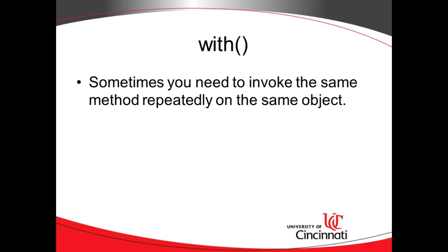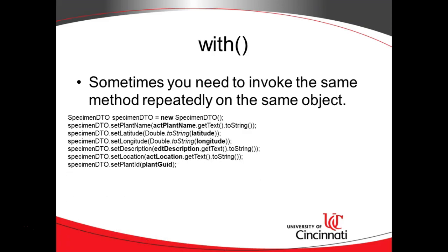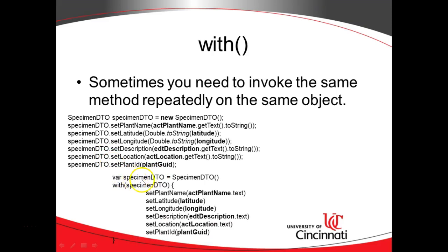with is an interesting one that I like in Kotlin. If you find you're invoking a series of methods on the same variable, you can use with to make it look a lot cleaner. In Java, we create a specimenDTO object and call a series of methods on it — a whole lot of typing. In Kotlin, we declare our specimenDTO and then use a with operator with specimenDTO in parentheses, meaning every line that follows invokes on that specimenDTO variable. There's also a shortcut where instead of calling getText you can just use the attribute text directly. Comparing Java and Kotlin, the Kotlin version is a whole lot less typing, which is very typical with Kotlin.